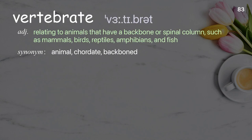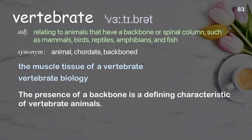Vertebrate: relating to animals that have a backbone or spinal column, such as mammals, birds, reptiles, amphibians, and fish. Examples: the muscle tissue of a vertebrate. The presence of a backbone is a defining characteristic of vertebrate animals.